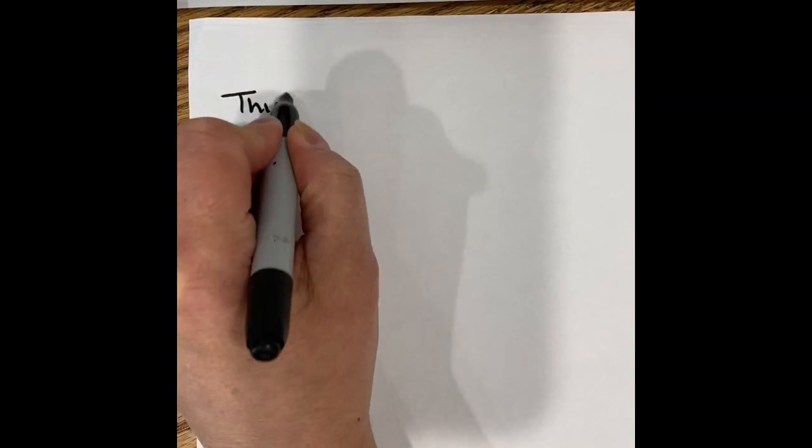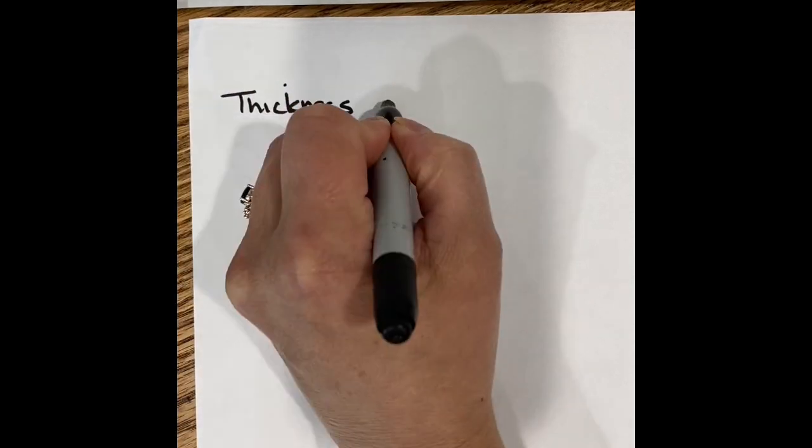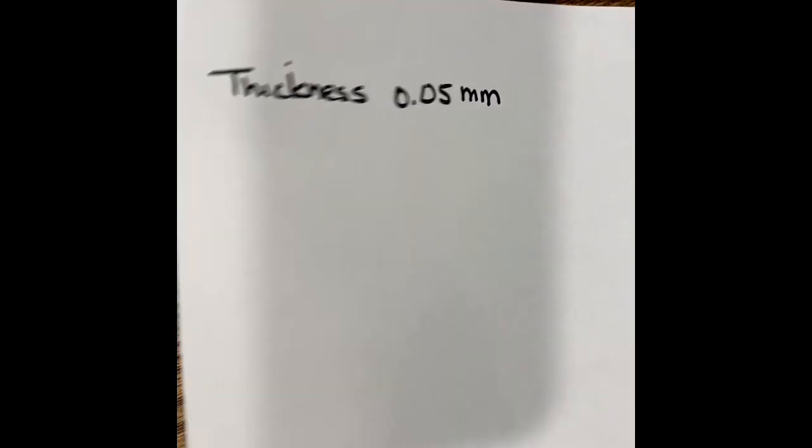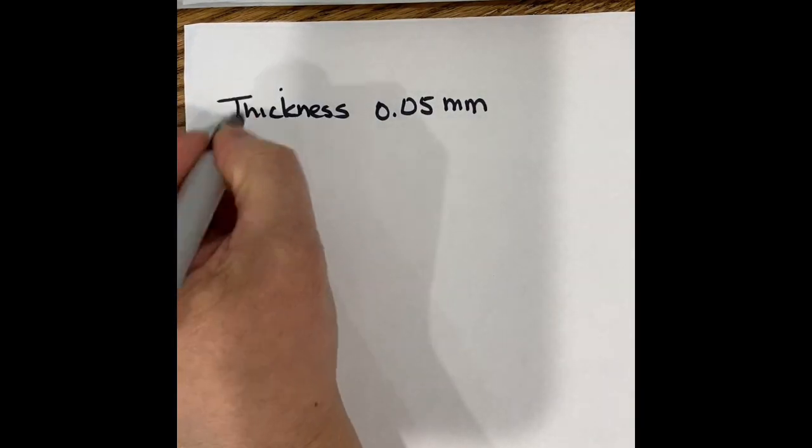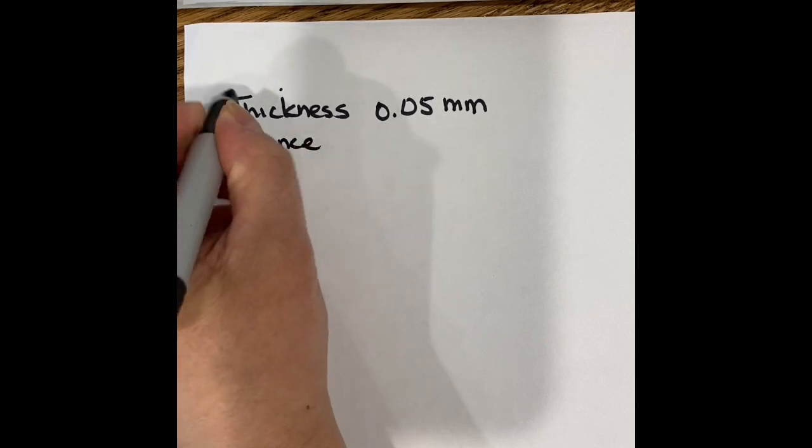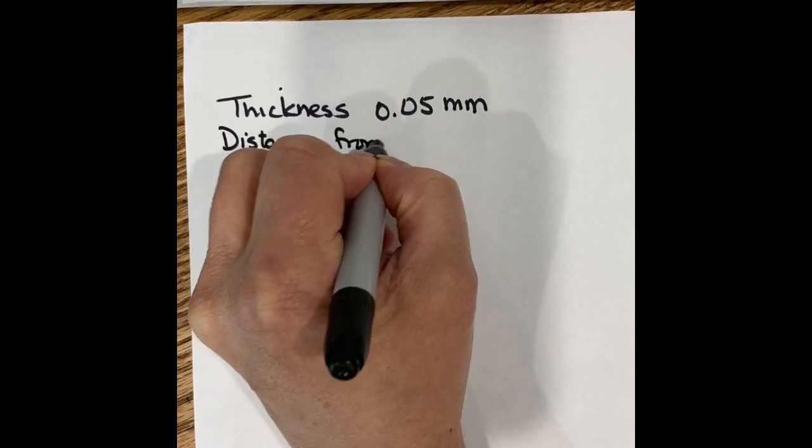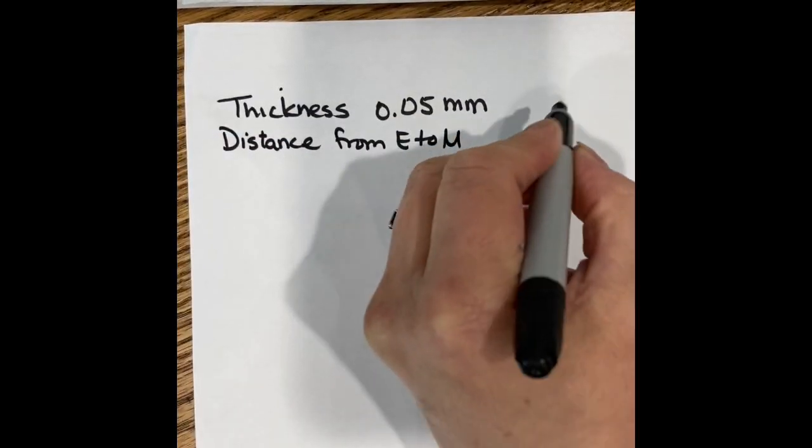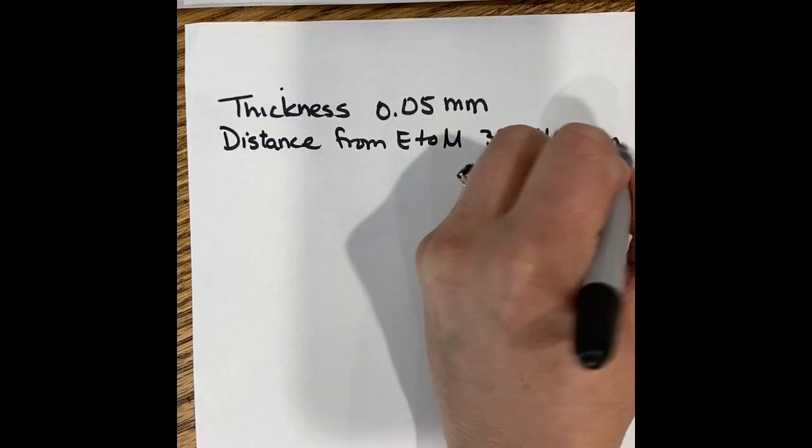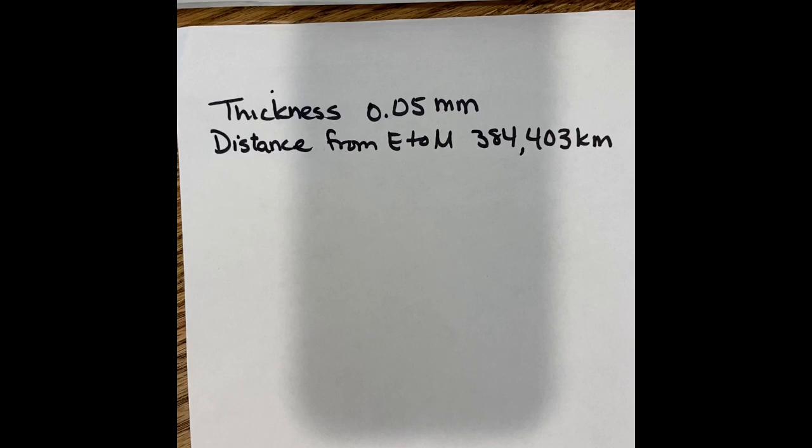So a couple pieces of information. We need to know how thick one piece of paper is. So we know that the thickness of a paper is, I looked it up, 0.05 millimeters is the thickness of a piece of paper, like what I'm writing on, the stuff that you get out of a printer. The other thing we need to know is the distance from the earth to the moon, and that is 384,403 kilometers. So those are two pieces of information that we need to know.